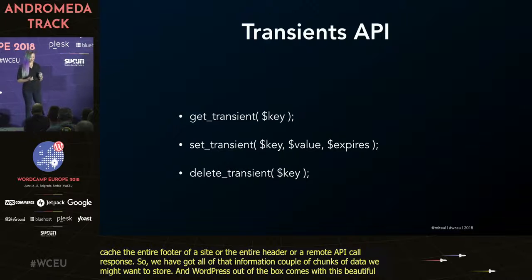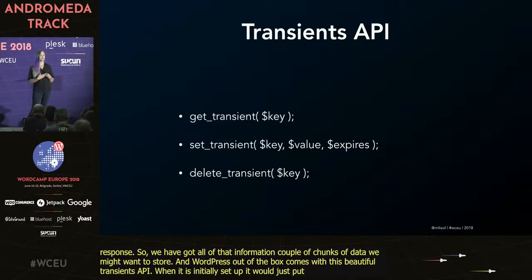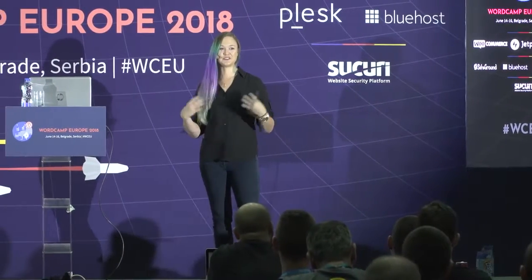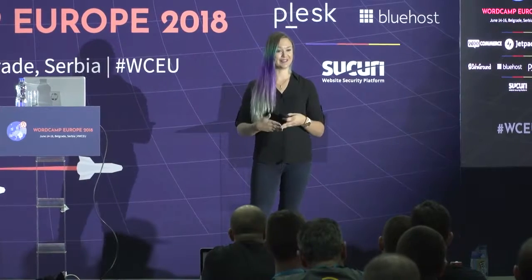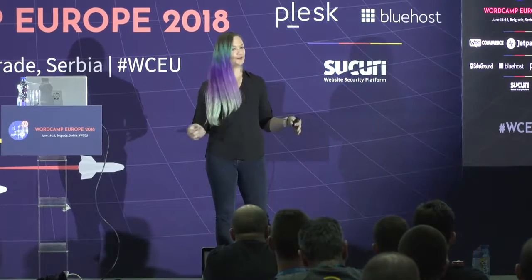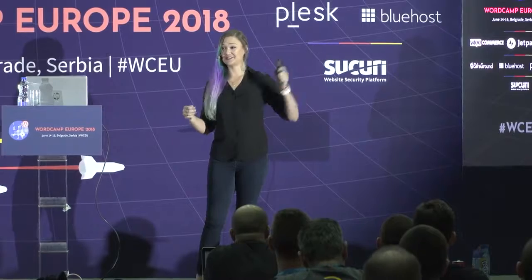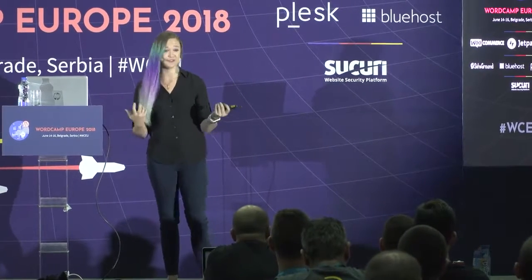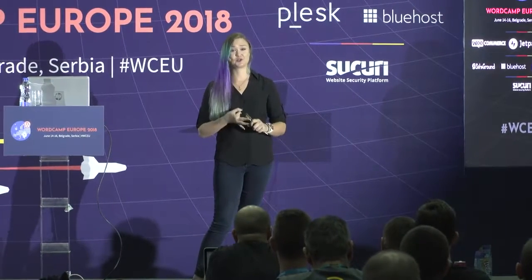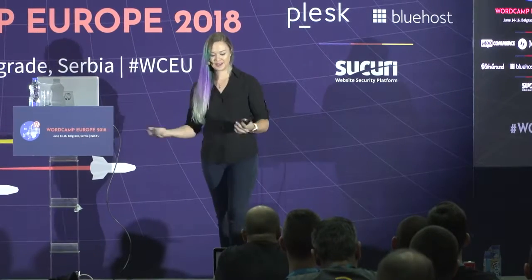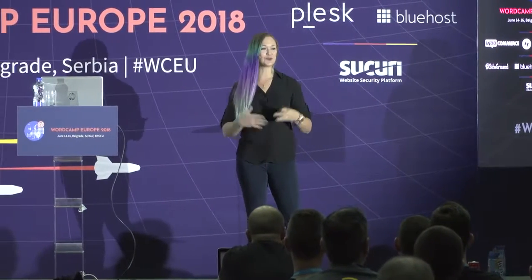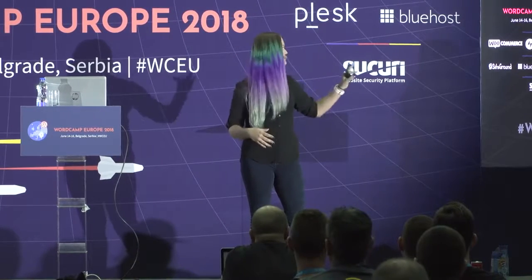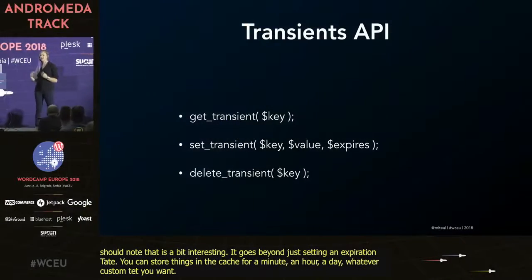WordPress out of the box comes with the beautiful Transients API. When it's initially set up, it puts information into the WP options table. What you set is a key specific to the data you want to fetch — much like the database itself, you've got key-value information that you're storing and fetching quickly. We're using get_transient to pull all the data. Set_transient is exactly what it says — you place the value, which could be any sort of information: JSON, an array, a string of HTML markup, anything you'd normally store in the database. And then delete_transient.